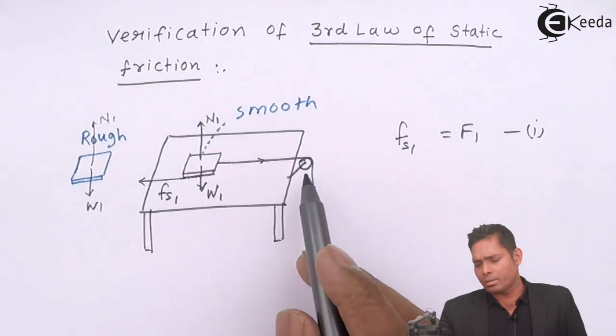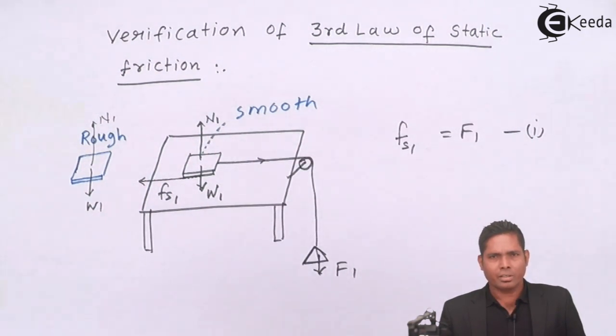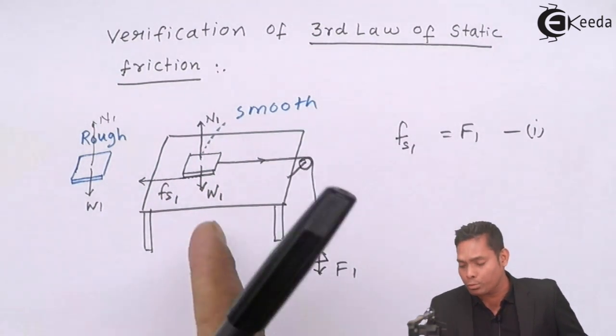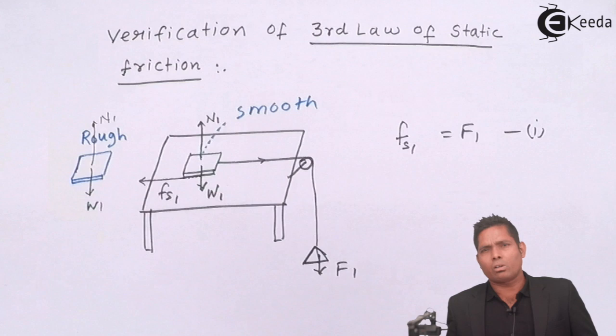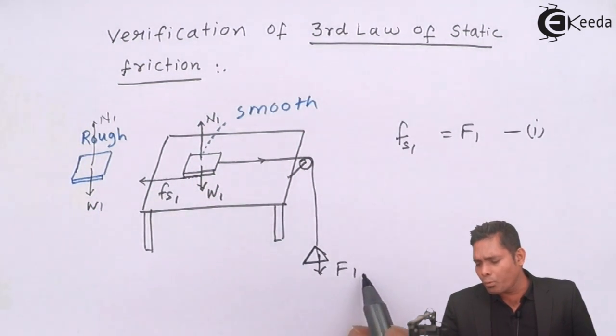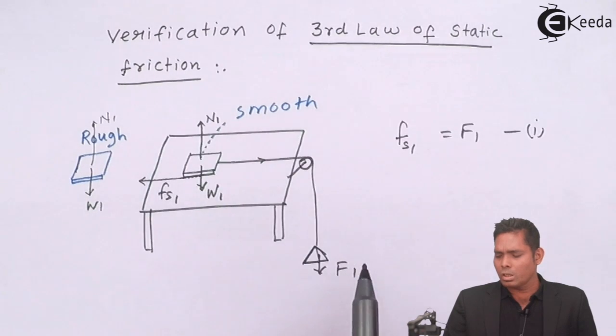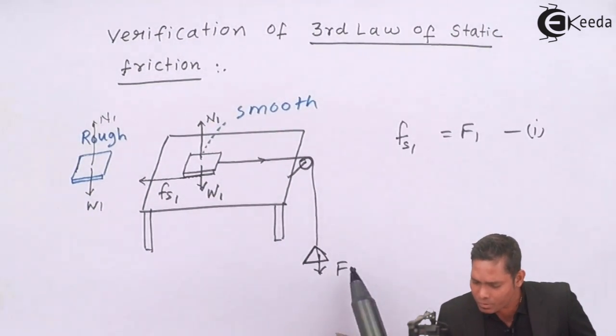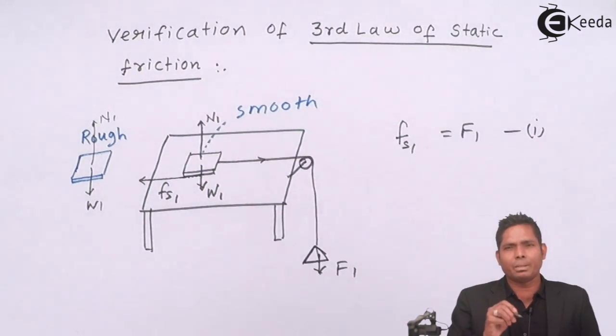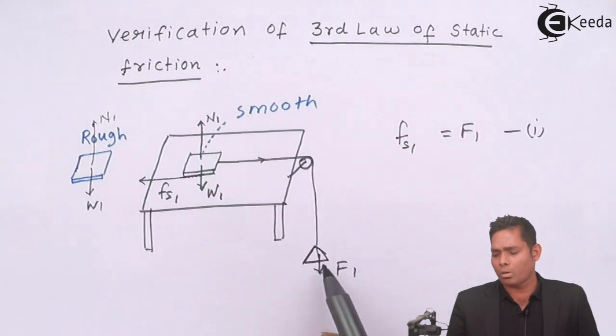If suppose it starts its motion at 10 newton force, not 9.5 or 9.8, only at 10 newton force—obviously if I apply 20 newton force, the block will start sliding also—so we are interested in the minimum amount of force which is responsible for this motion. That minimum force is equal to the limiting friction value because that limiting friction is equal to the force that is pulling this.